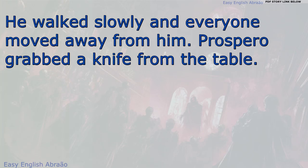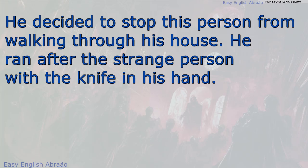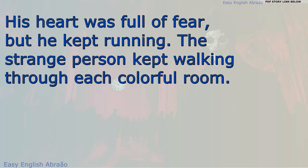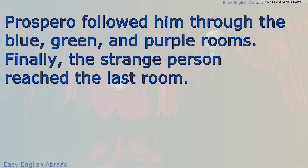Prospero grabbed a knife from the table. He decided to stop this person from walking through his house. He ran after the strange person with the knife in his hand. His heart was full of fear, but he kept running. The strange person kept walking through each colorful room. Prospero followed him through the blue, green, and purple rooms. Finally, the strange person reached the last room.